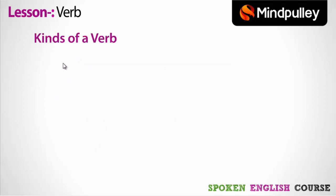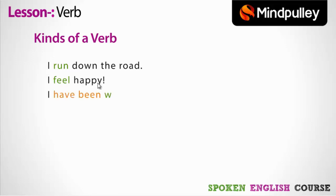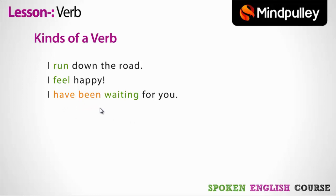Let's take examples. For an action verb: 'I run down the road.' Run is an action verb — it's something you do. For a linking verb: 'I feel happy.' Feel is a linking verb — it's an equal sign verb. For helping verbs: 'I have been waiting for you.' Here, 'waiting' is the action verb — it's something you do. But 'have been' is a helping verb that helps to form a new tense. So we can identify action verbs, linking verbs, and helping verbs.